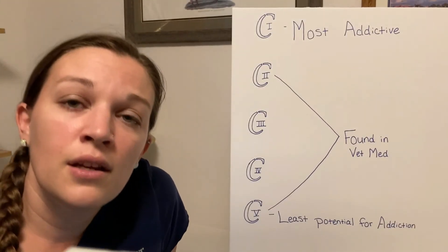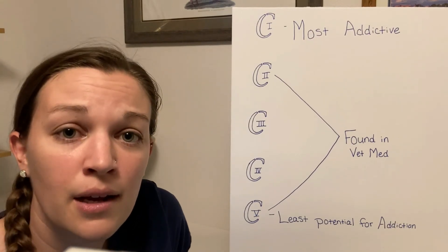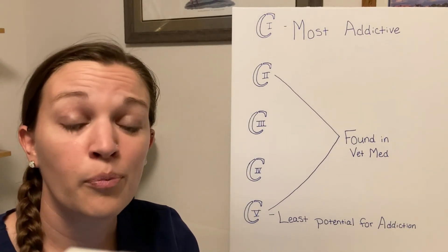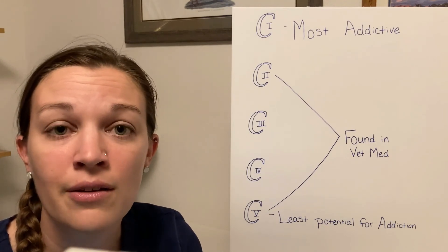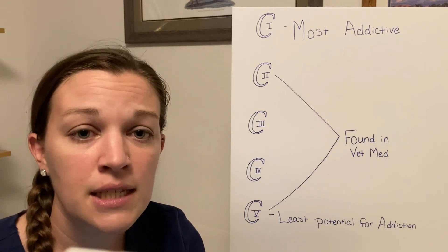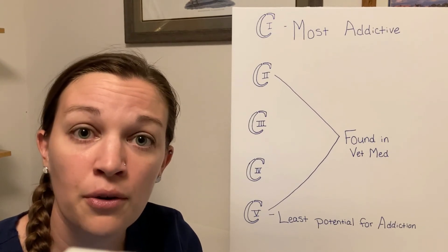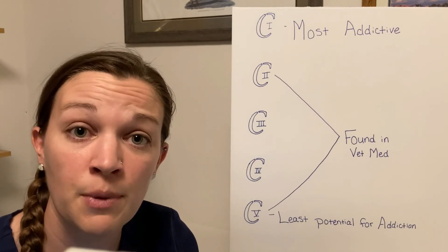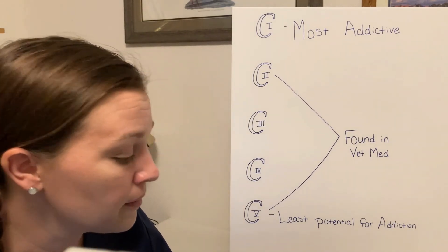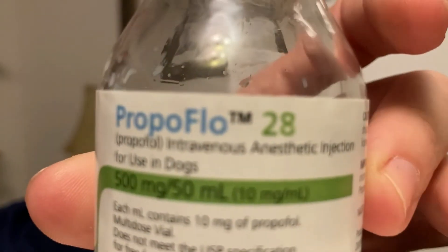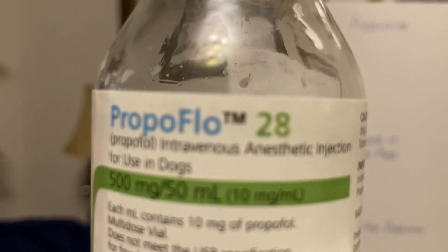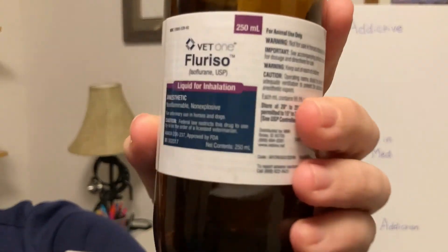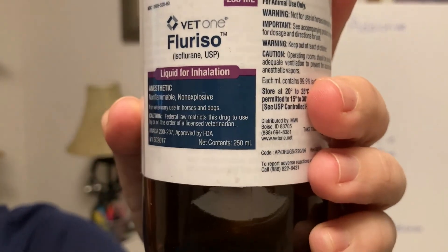Some other drugs used in general anesthetic procedures but are not controlled drugs are propofol and your gas inhalants, either isoflurane or sevoflurane. Typically, hospitals choose to lock these drugs up anyway even though they're not technically controlled substances, so do make sure you understand the protocols of your hospital. No little tiny C anywhere on that propofol, and none to be found on the iso either.